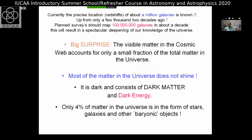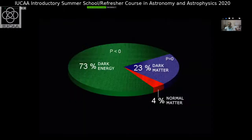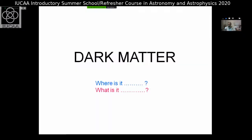Only 4 to 5% of the matter in the universe is in the form of stars, galaxies, and other baryonic objects. Here's the pie chart. So dark matter: what is it, and where is it? These are the two questions that automatically arise.